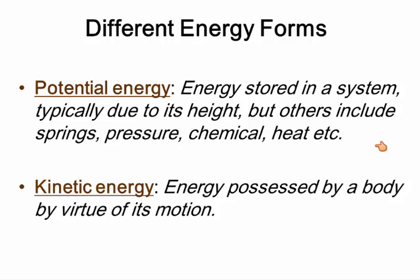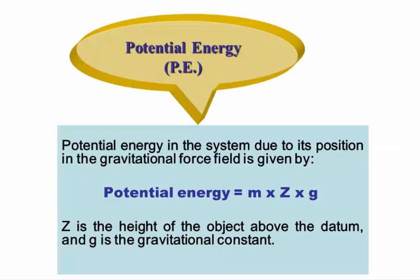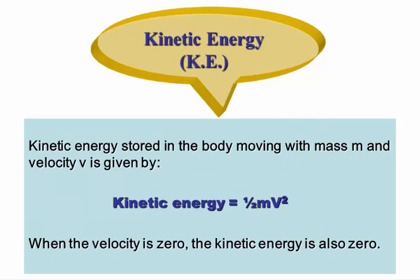One is potential energy - that's energy that has potential to cause work but hasn't been used yet. Kinetic energy is the energy we use to actually do work. Potential energy in the system due to its position in the gravitational force field is mass times Z times g. Z is the height of the object above your datum point - the datum point being the top of a ship, the top of a building, whatever is where the object is going to land. The difference in height between the datum point and the object is Z, and that's how we work out potential energy.